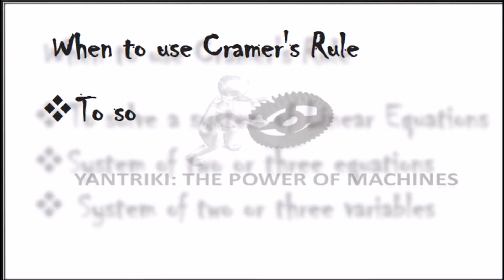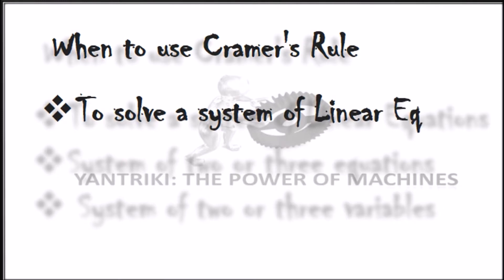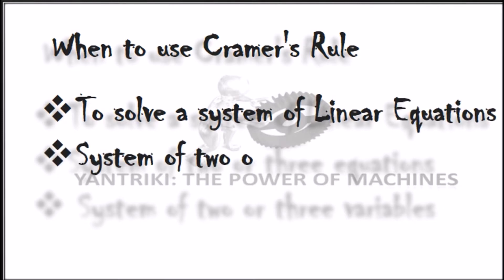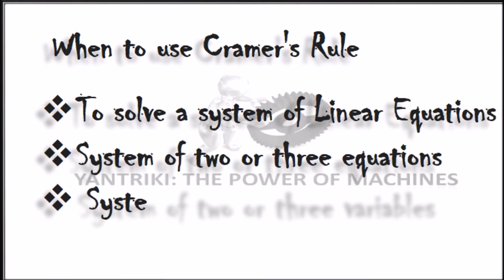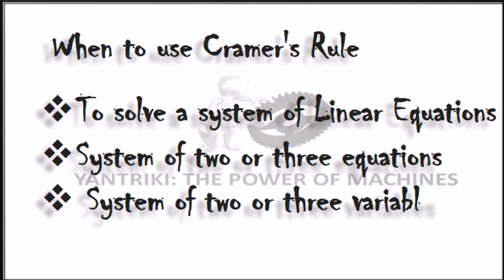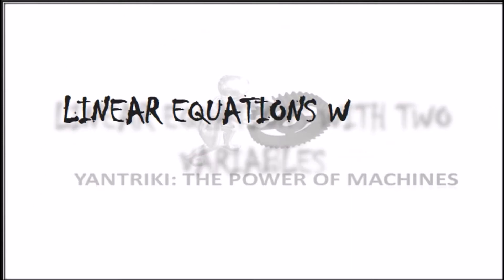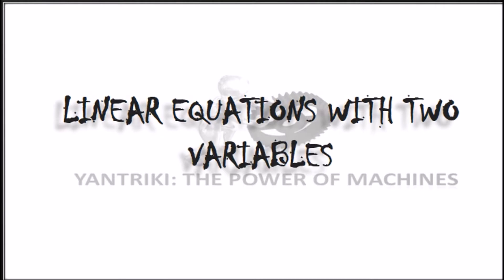Cramer's Rule for 3x3 matrices works pretty much the same way it does for 2x2 matrices — it follows the same pattern. Let's understand this with an example of linear equations with two variables.